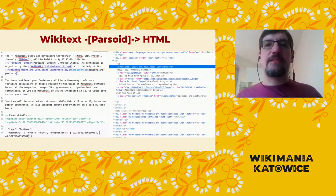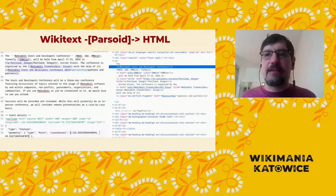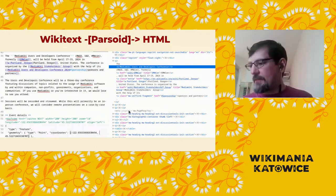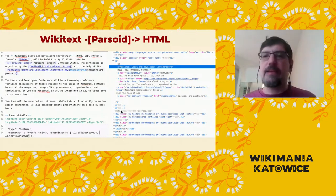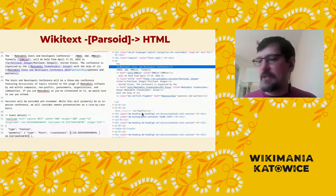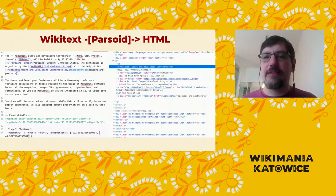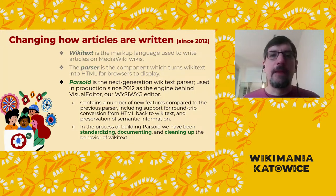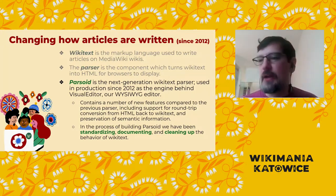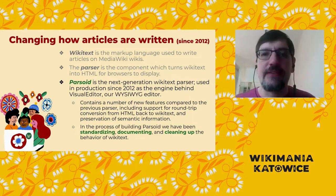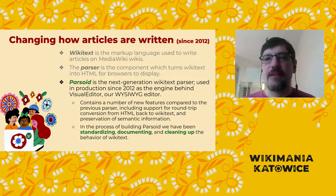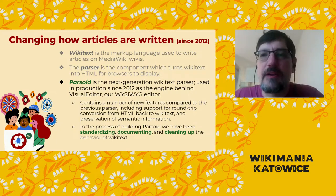Without getting too far into the weeds, note that Parsoid is generating invisible tags in the HTML — like this meta tag here indicating the position of the table of contents. This preserves information from the original Wikitext. The information carried by these invisible tags can be useful for editors, gadgets, or tools. This is the main feature of Parsoid compared to the old parser: it preserves all the information from the original Wikitext, including template boundaries, comments, and other invisible metadata and markup.